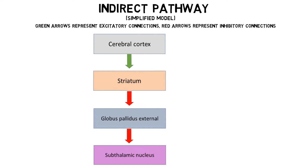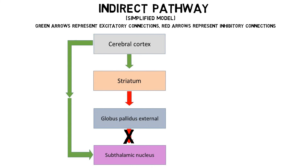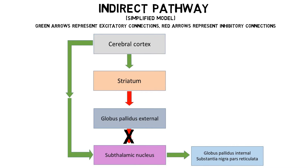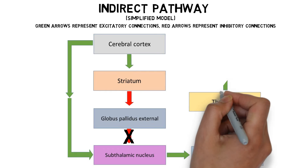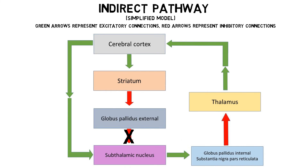This keeps the globus pallidus external neurons from being able to inhibit neurons in the subthalamic nucleus. The subthalamic nucleus neurons are activated by projections from the cortex, and they stimulate GABA neurons in the globus pallidus internal segment and substantia nigra pars reticulata. These GABA neurons in turn project to the thalamus, inhibiting thalamic neurons that travel to motor regions of the cerebral cortex to stimulate movement.